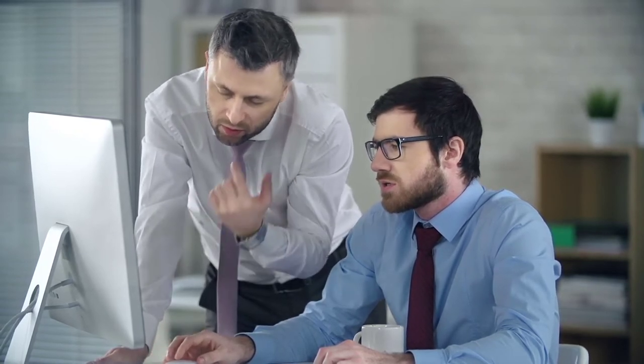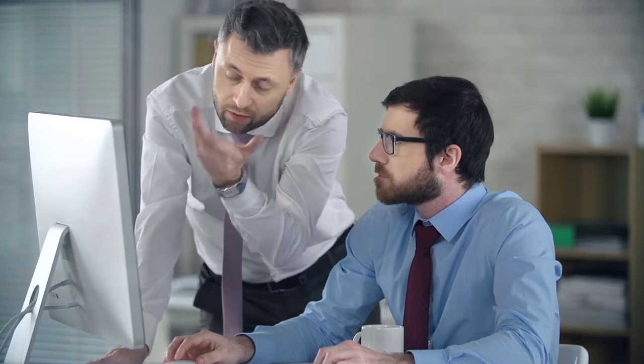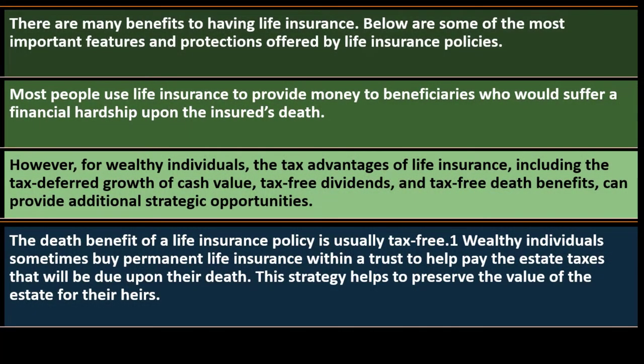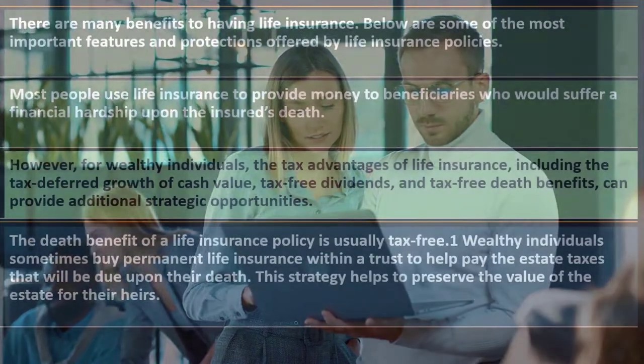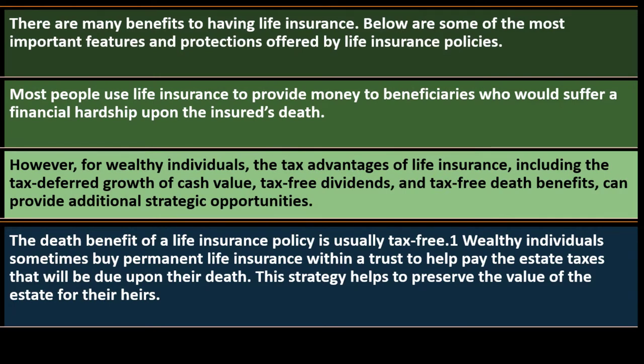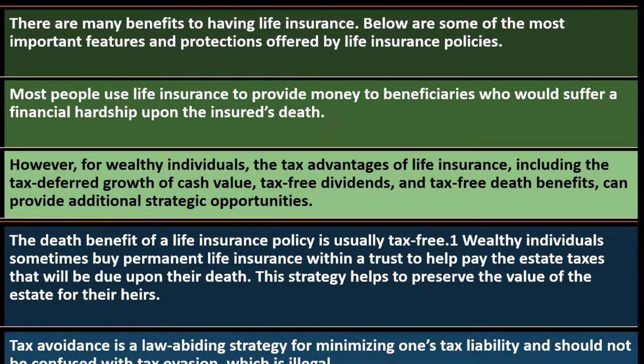Obviously, one thing you might think of is giving away money on your deathbed to a son, wife, or family member. The government has figured that out and tries to stop it. So that whole genre of taxation and planning has many issues, and this strategy of using life insurance helps to preserve the value of the estate for heirs.